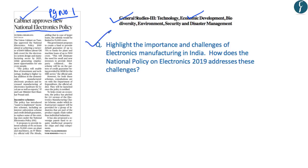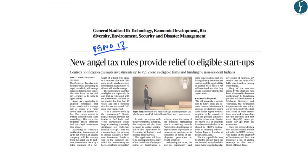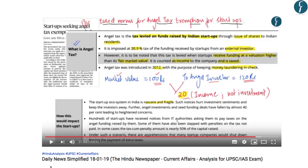The next article on page number 13 is related to new rules notified by the center related to angel tax, significant due to recent controversy. This forms part of General Studies Paper 3 under economic development. The angel tax is applicable to unlisted companies that have raised capital through sale of shares at a value above their fair market value. Most startup companies are unlisted on the stock market but have been raising capital through sale of shares above their fair market value.